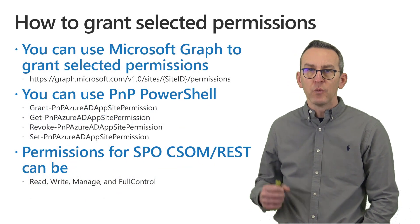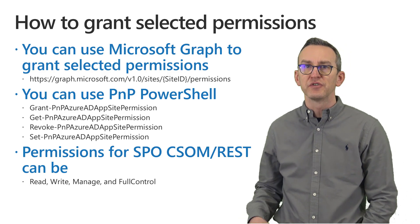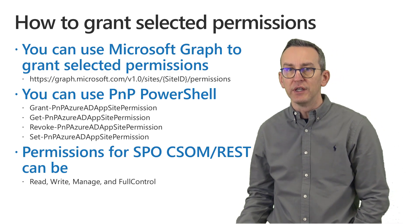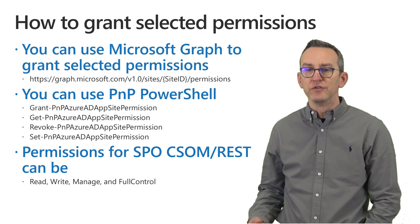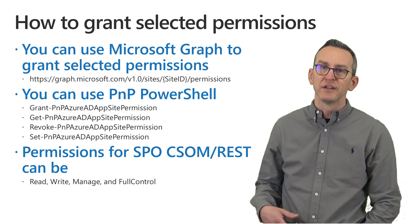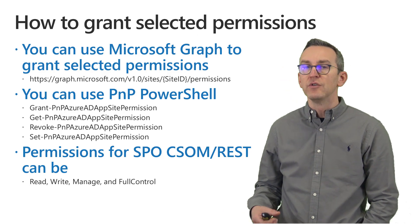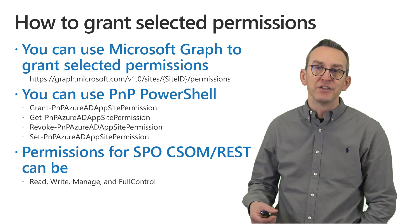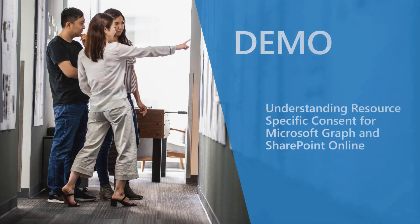When you use the site.selected permissions, you need to grant those permissions to a specific target site collection either using a Microsoft Graph endpoint or using PnP PowerShell. Then you can use CSOM or SPO REST to consume SharePoint, and you can configure this selected permission as read-only, write, manage, or full control. This is a really powerful capability, and now let's move to the demo environment to see how to use it in practice.